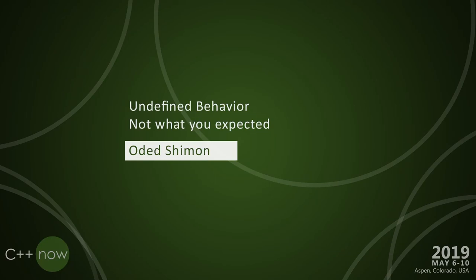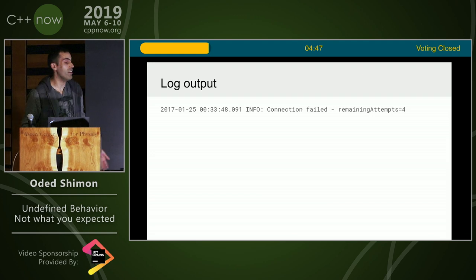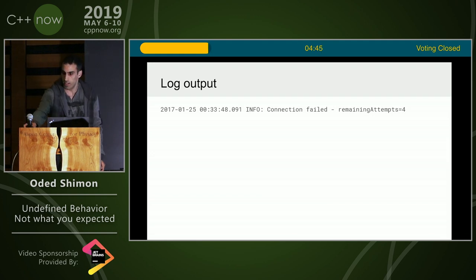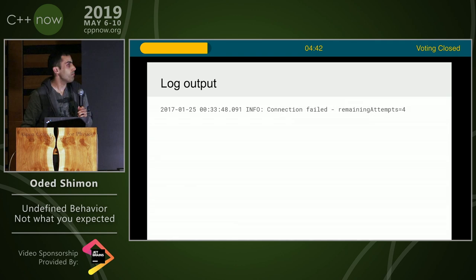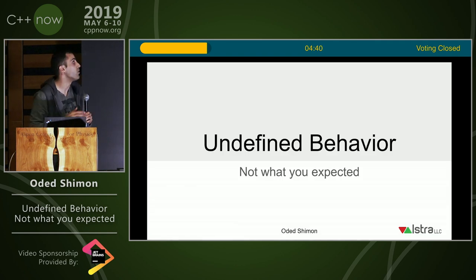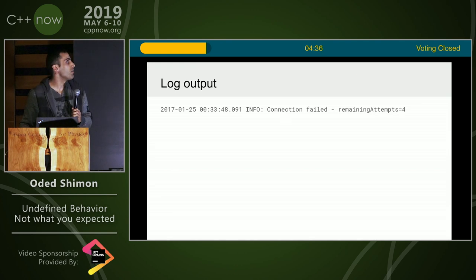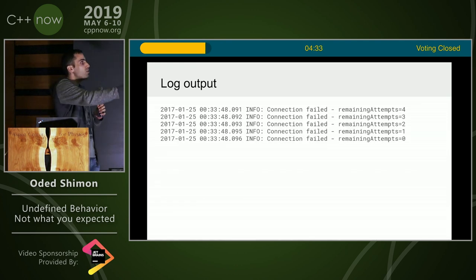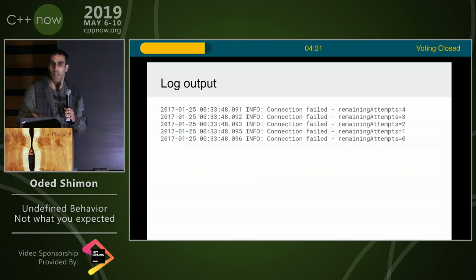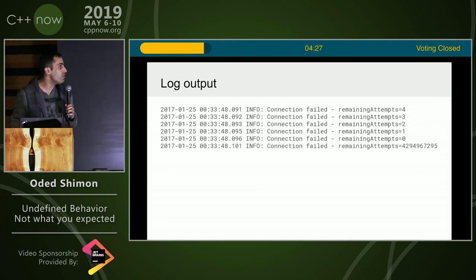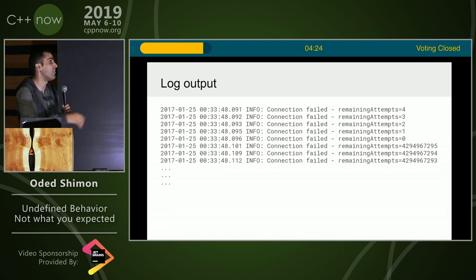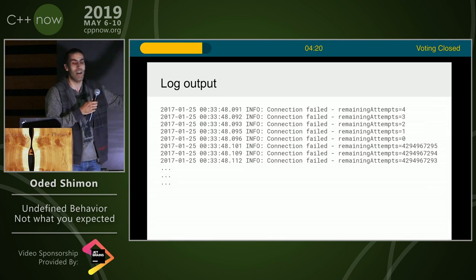This is going to be very short, it's just about a bug that we had once. Connection failed, remaining attempts: four, three, two, one, zero — and then it kept going. It went on and on. This is a very obvious bug, we know what happened here.